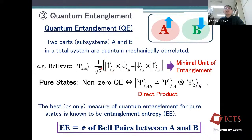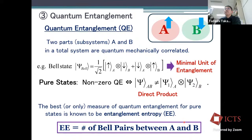This Bell state gives the minimum unit of entanglement — one bit of quantum entanglement. In general, for a pure state, we say there is non-zero quantum entanglement if the state is not factorized as a direct product state. The best measure of quantum entanglement for a pure state is known to be entanglement entropy, which effectively measures the number of Bell pairs between A and B — counting the number of such entangled states.